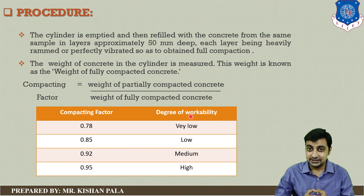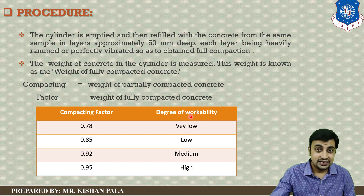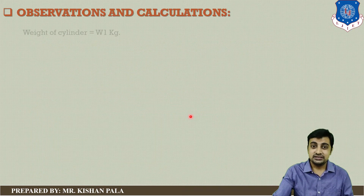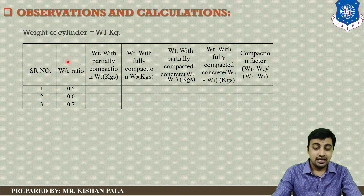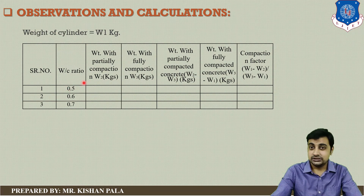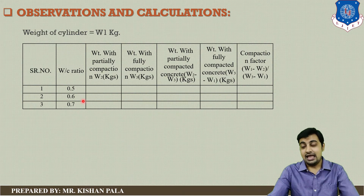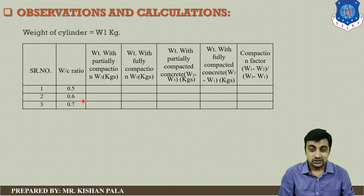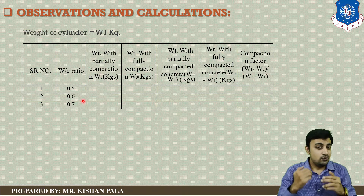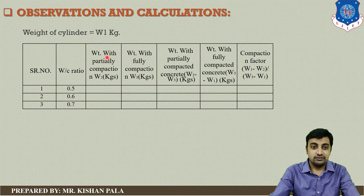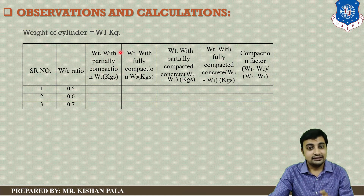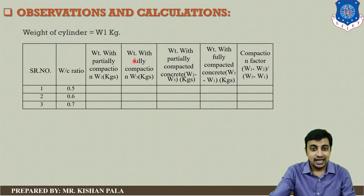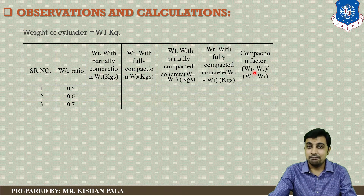Now let us discuss observations and calculations. The table shows different water-cement ratios: 0.5, 0.6, and 0.7. One important point: with increasing the water-cement ratio, you will get higher workability. First, measure the weight of partially compacted concrete, then measure the weight of fully compacted concrete, and then calculate the compaction factor as the ratio of partially compacted to fully compacted concrete.